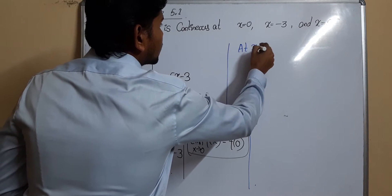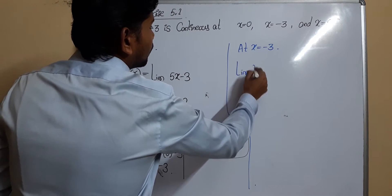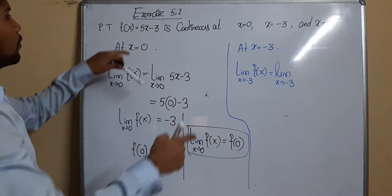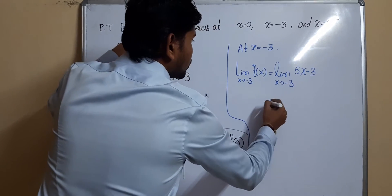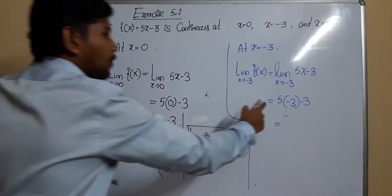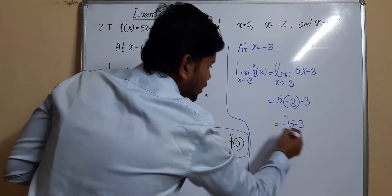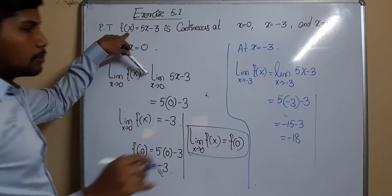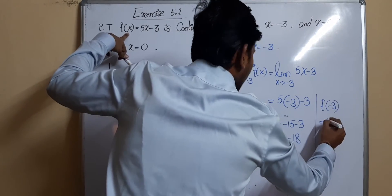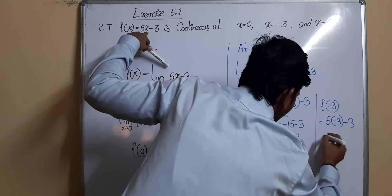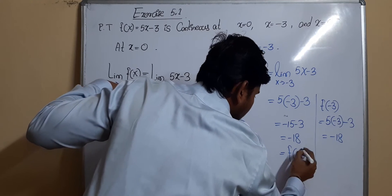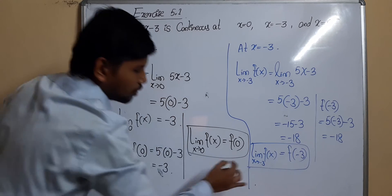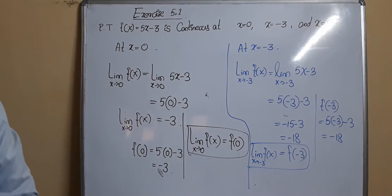At x = −3: limit of f(x) as x tends to −3 equals 5(−3) − 3 = −15 − 3 = −18. The value f(−3) = 5(−3) − 3 = −18. Since the limit equals f(−3), by the definition of continuity the function is continuous at x = −3. You can similarly verify continuity at x = 5.